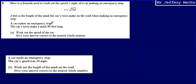It tells us that a car makes an emergency stop and the car's tires make a mark 90 feet long. We're asked to work out the speed of the car. This is fairly simple. All we're going to do is substitute 90 in for d. So v will be equal to the square root of 21 multiplied by 90.